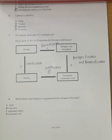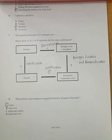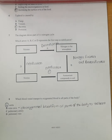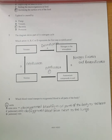Number 8: which blood vessel transports oxygenated blood to all parts of the body? We are going to select the aorta as our answer, which is A. The aorta transports oxygenated blood to all parts of the body. The vena cava transports deoxygenated blood from all parts of the body to the heart. The pulmonary artery transports deoxygenated blood from the heart to the lungs.